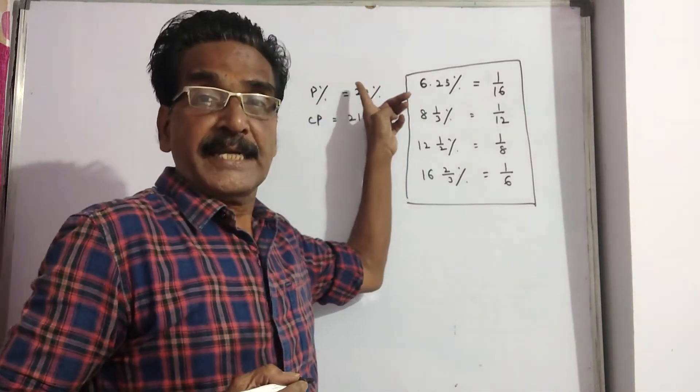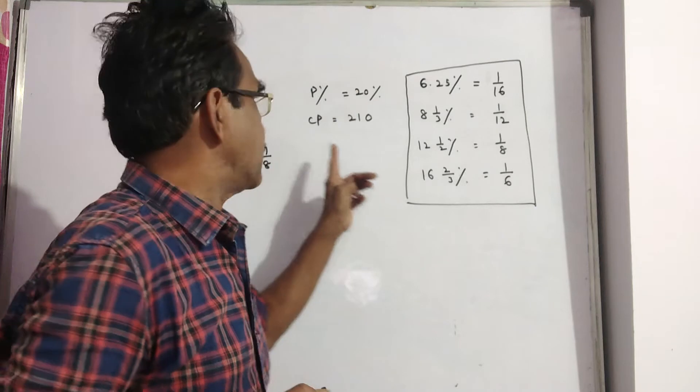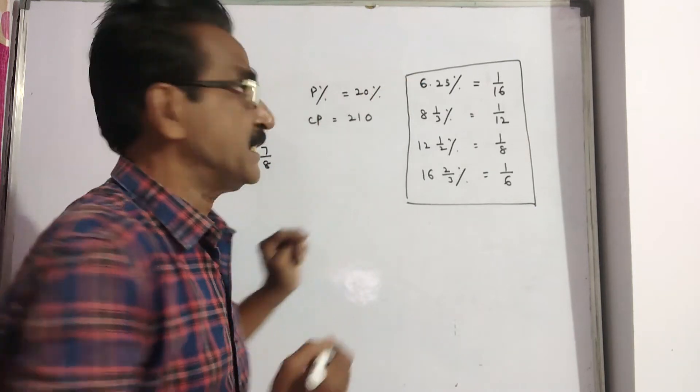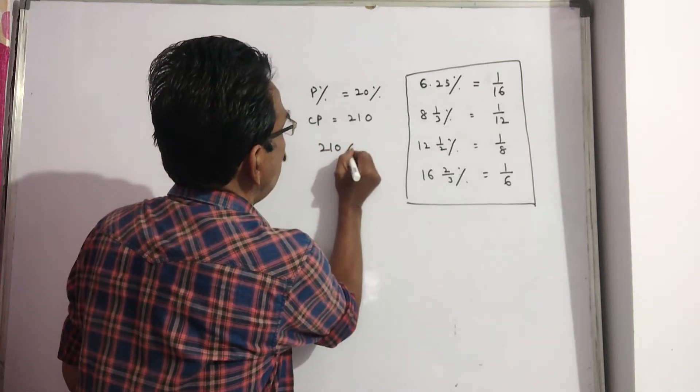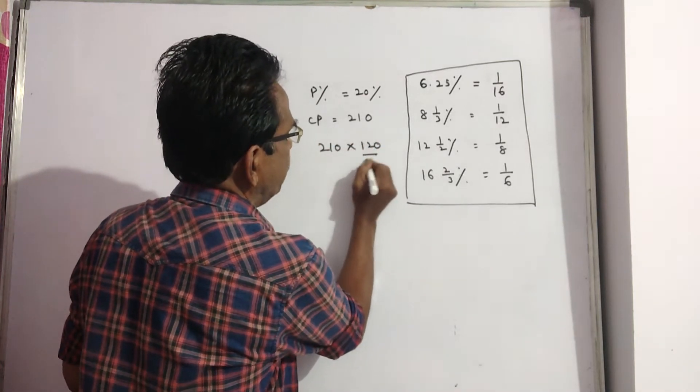And now here also we can find the sold price. Cost price is 210, profit is 20%, means sold price is cost price into 120 by 100.